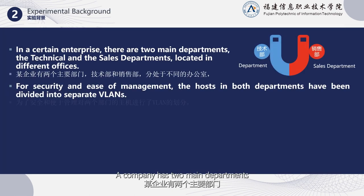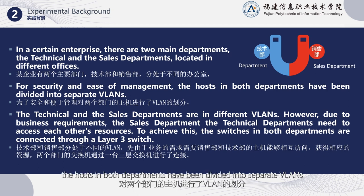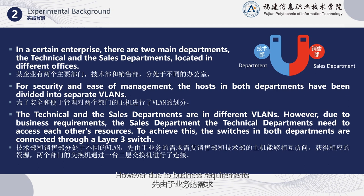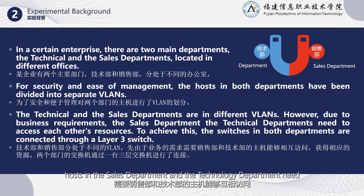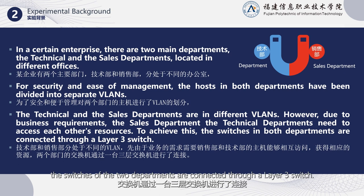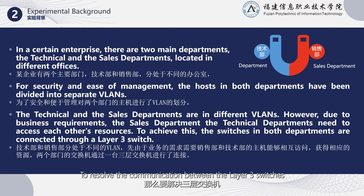Experiment background: a company has two main departments, the Technology Department and the Sales Department, located in different offices. For security and ease of management, the hosts in both departments have been divided into separate VLANs, with the Technology Department and the Sales Department each in their own VLAN. However, due to business requirements, hosts in both departments need to access each other and obtain corresponding resources. To achieve this, the switches of the two departments are connected through a Layer 3 switch.